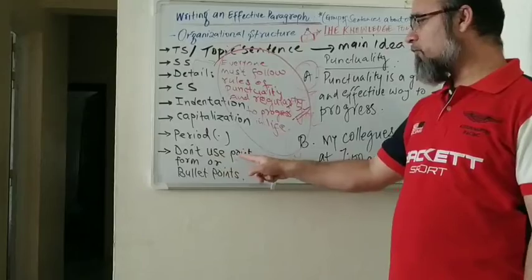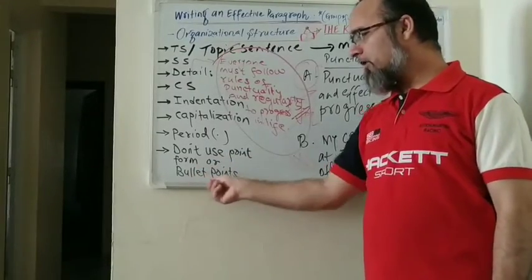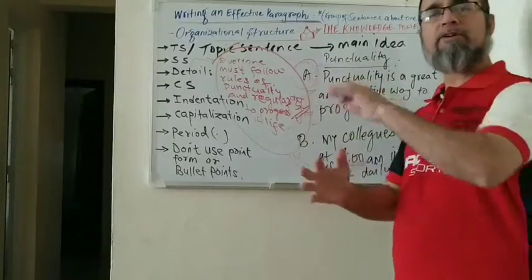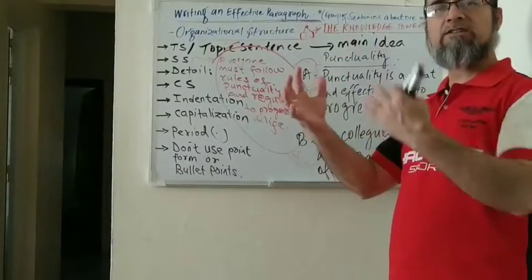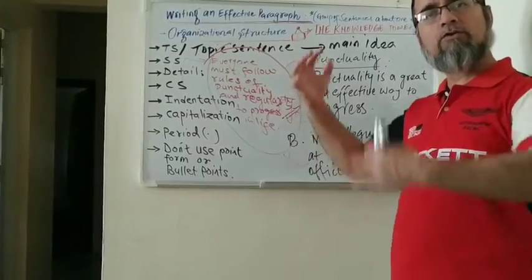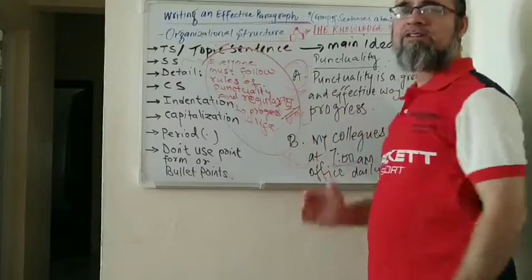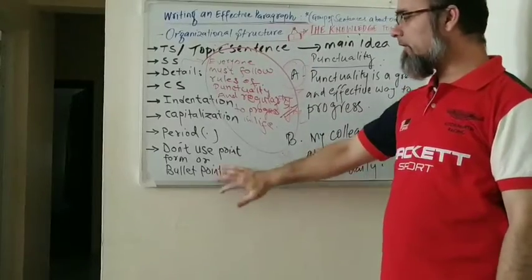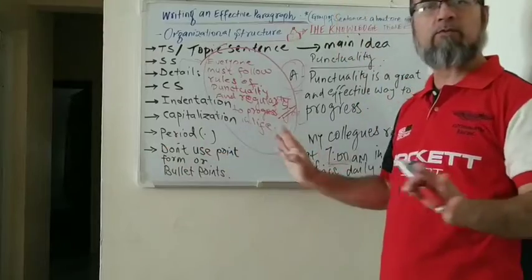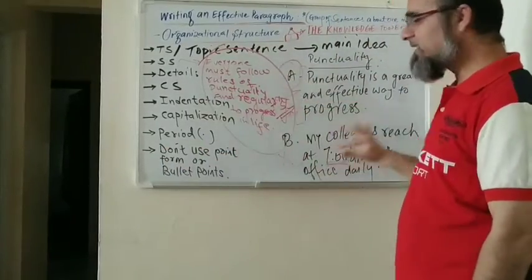The last important point regarding paragraph writing is: don't use point form in your paragraph writing. Point form means bullet points. When you are writing a paragraph, it should be a wholesome picture — all sentences starting from the topic sentence, through supporting sentences, to the concluding sentence should be integrated as one whole picture. We don't write bullet points like one, two, three, four in a paragraph.